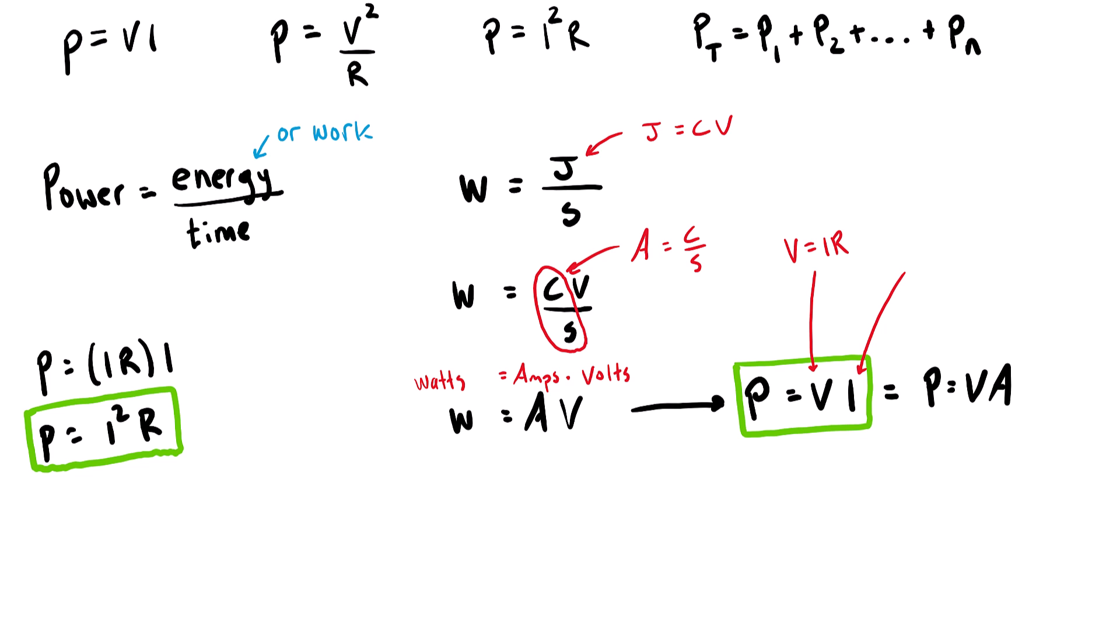If we rearrange Ohm's law, we see that I equals V over R. So again, we substitute that into this formula. So we have p equals the first variable times what we're substituting for the second variable, which is V over R. And this can be rearranged, so we get power equals V squared over R.